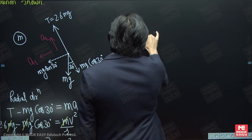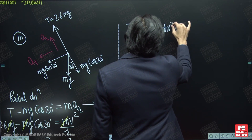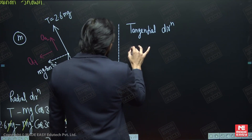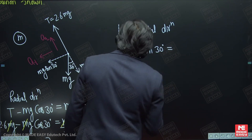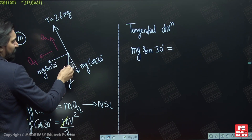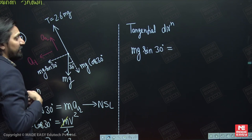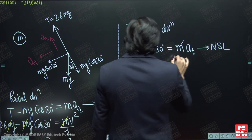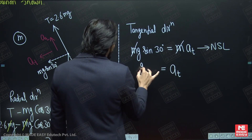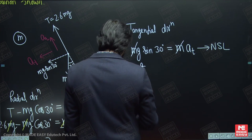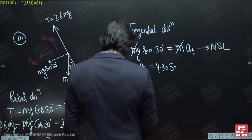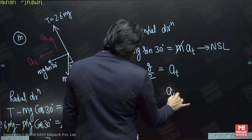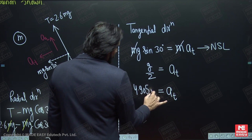For the tangential direction, tension has no component along the tangential direction. Mg cos 30 is also perpendicular to the tangential direction. Only mg sin 30 acts as the resultant force in the tangential direction. By Newton's second law: mg sin 30 = m × at. Cancelling m, the tangential acceleration at = g sin 30 = g/2 = 4.905 meters per second squared.